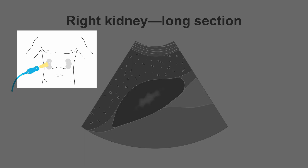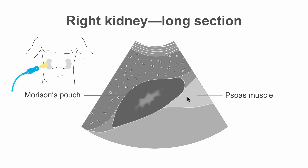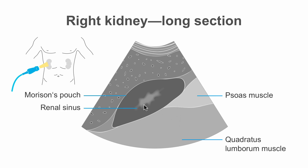We should use a transcostal view on the right hypochondriac region to see the right kidney in long section. The Morrison's pouch is the thin echogenic line between the right liver lobe and the right kidney. In this view, we can also see the psoas muscle and the quadratus lumborum muscle bordering the kidney dorsally. We can also see the hypoechoic renal sinus inside the kidney.